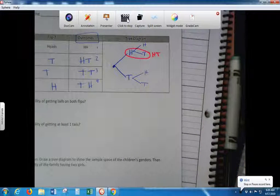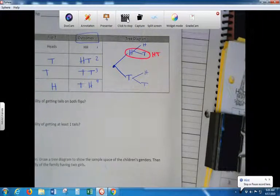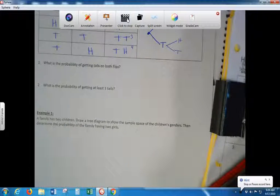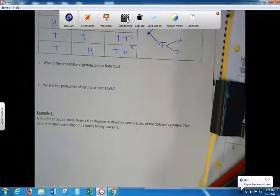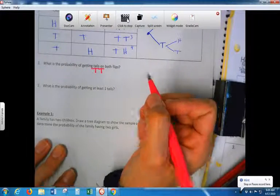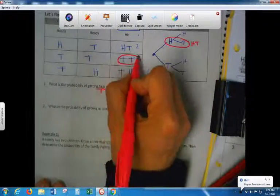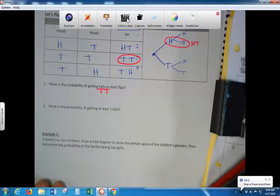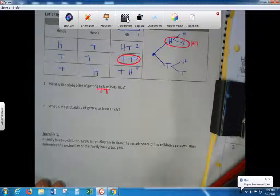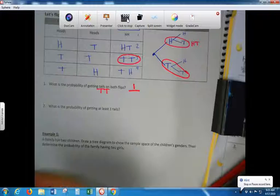Let's move on to number one. What is the probability of getting tails on both flips? Tails, tails. How many times do you see tails, tails? One. Where else do you see tails, tails? Well, I mean, this represents the same thing. So how many times? So here, right here. So one out of four.